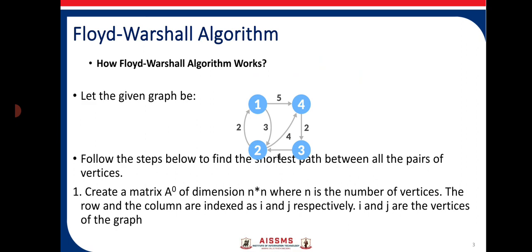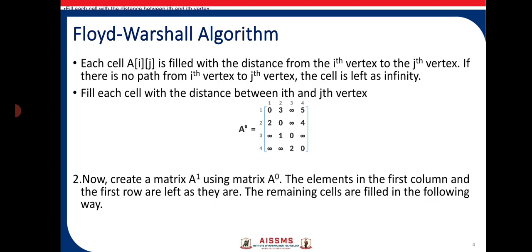Based on the given vertices, we will be creating a matrix A0 of dimension N by N, where N is the number of vertices. Here we have 4 vertices, so our matrix will be of size 4 by 4. The rows and columns are indexed as i and j respectively, where i and j are the vertices of the graph. Each cell A[i][j] is filled with the distance from the i-th vertex to the j-th vertex. If there is no path, we keep it as infinity; if there is a path, we keep the weight of that edge.